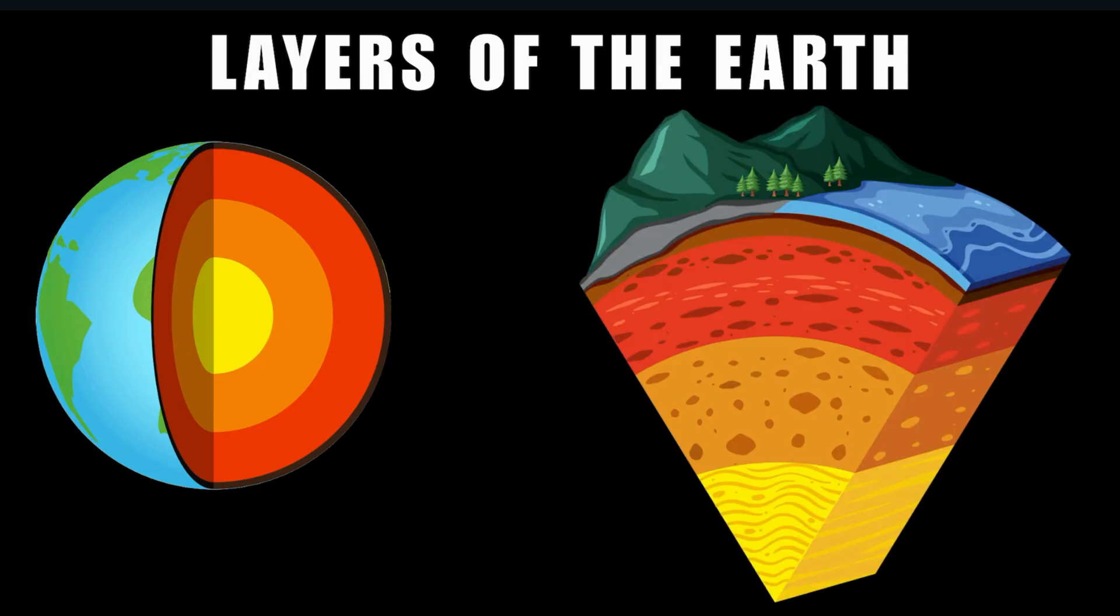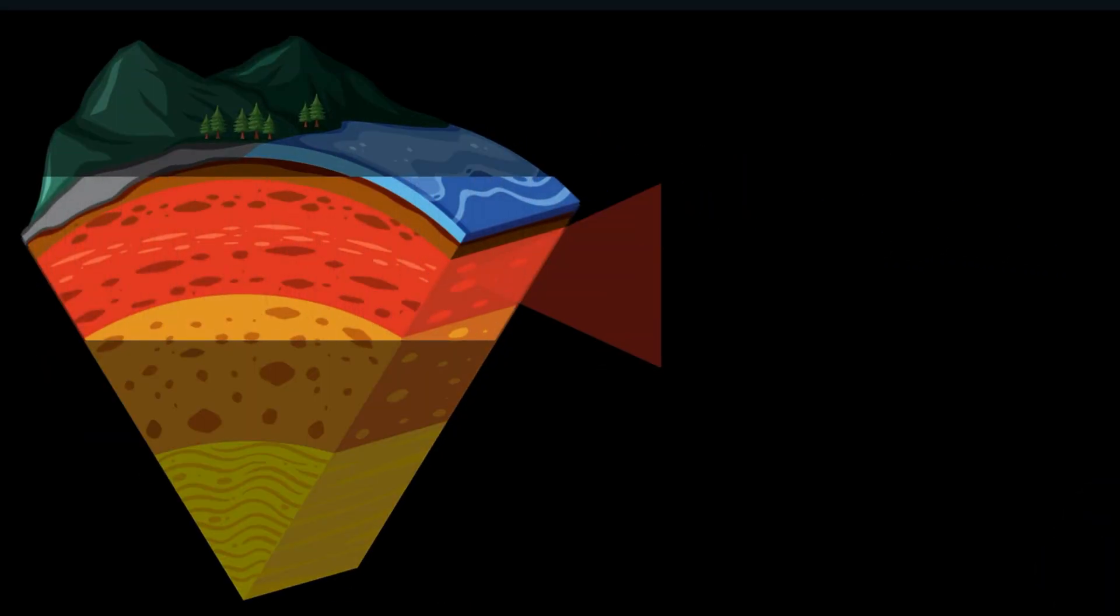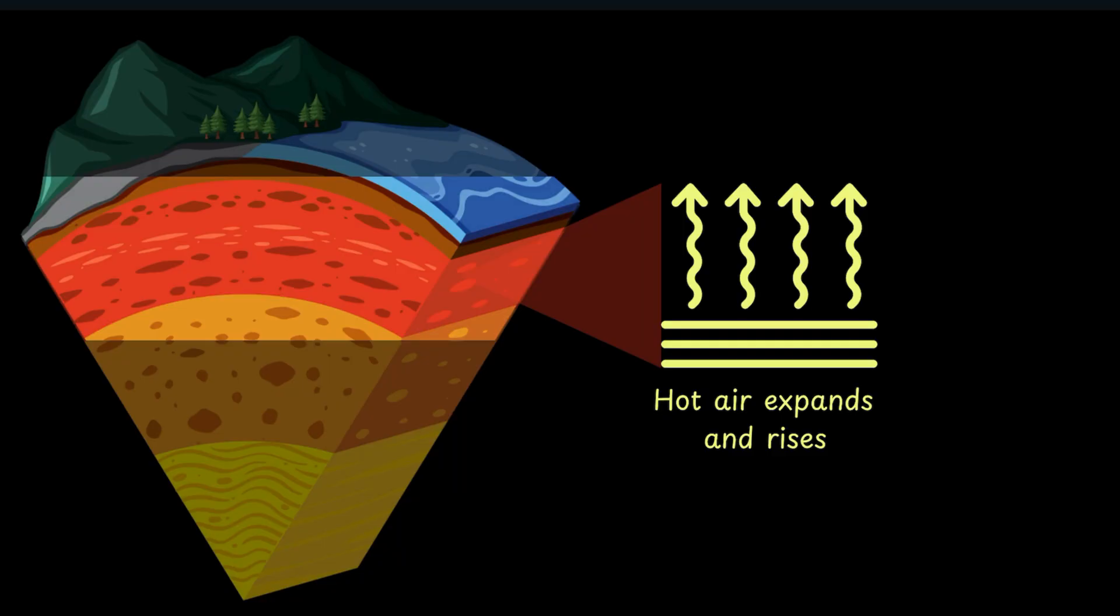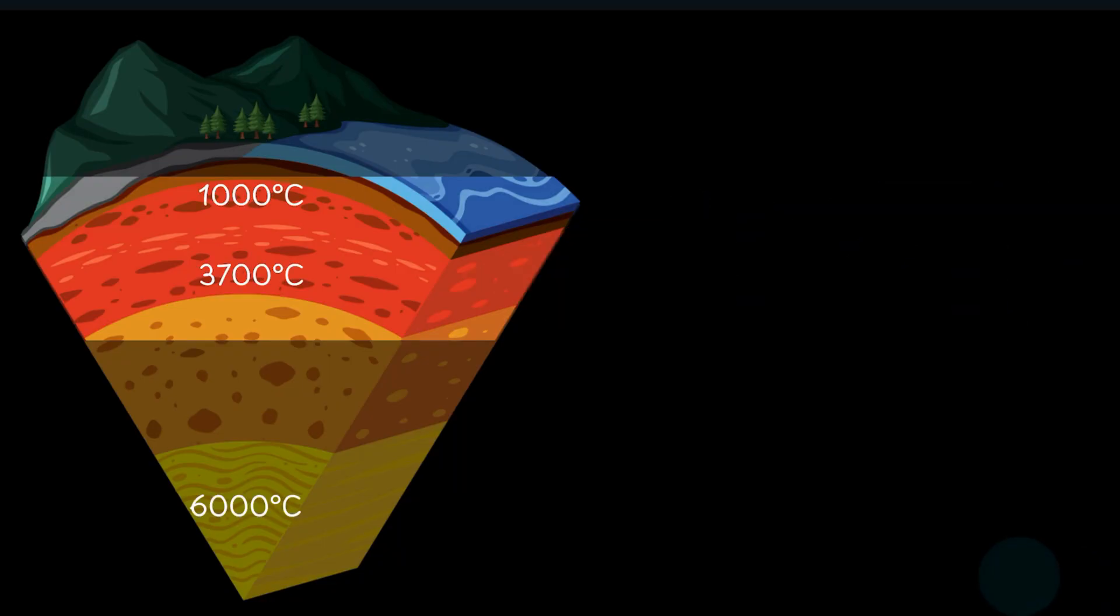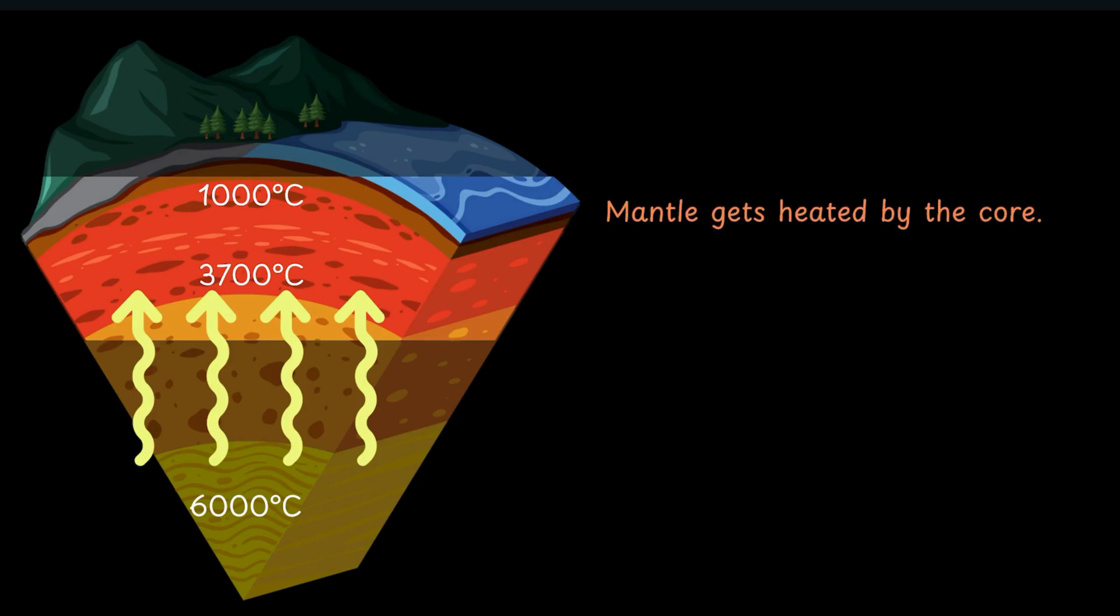Anyways, our layers of focus for this video in order to understand why and how earthquakes occur are the crust and the mantle. Now, there is a process going on inside the mantle whereby warm things rise and cold things sink. You see, the mantle gets heated by the core. The core is around 6,000 degrees Celsius while the mantle is cooler. So heat moves from a hotter area to a less hot one.